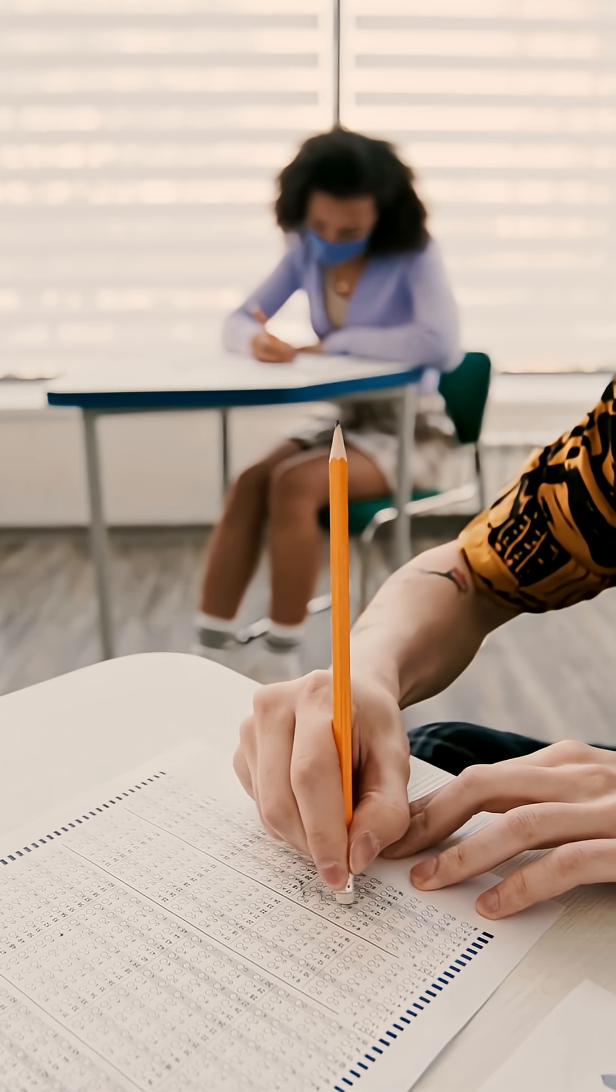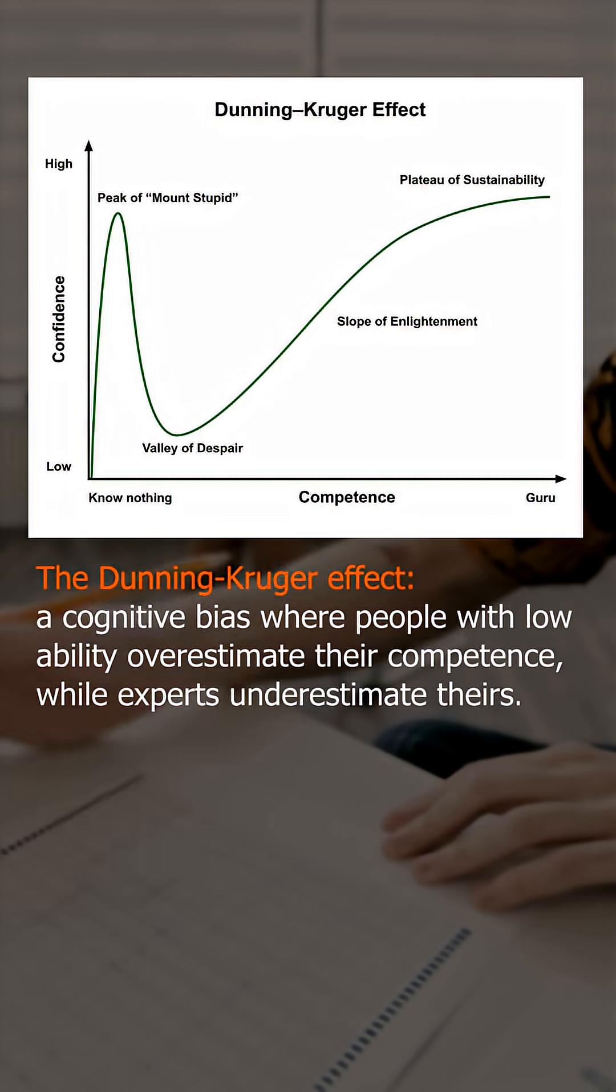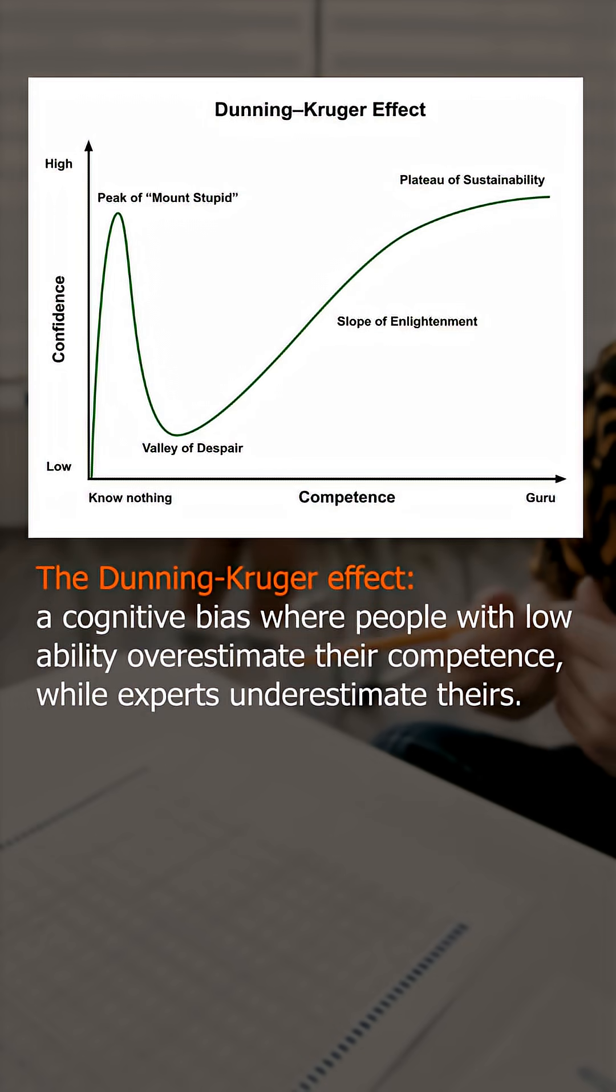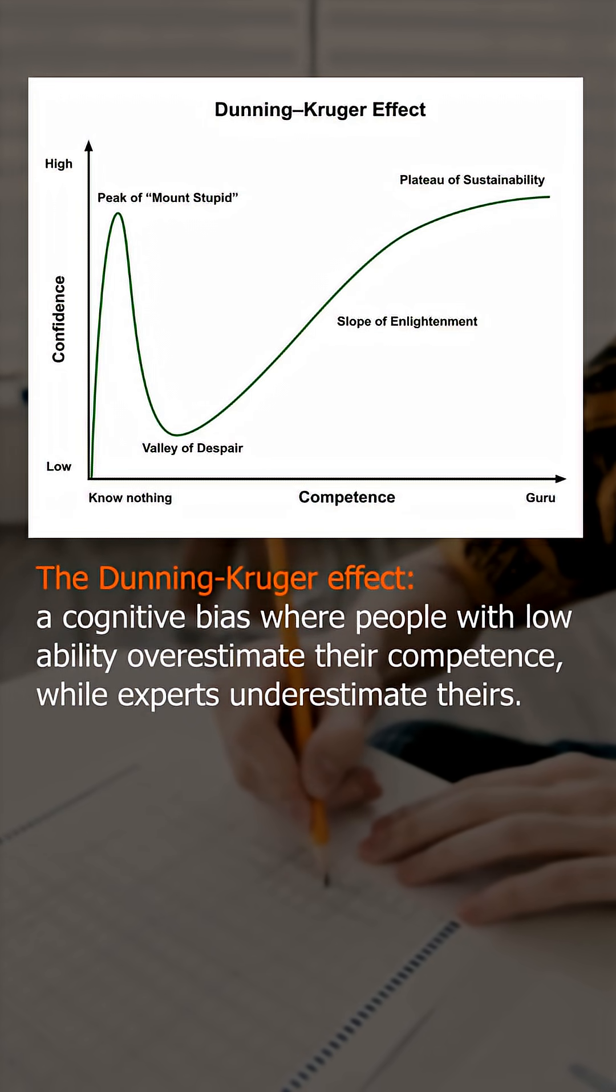Surprisingly, the people who actually did well in the test underrated themselves. This is the Dunning-Kruger effect. We sometimes lack the skill or ability to recognize our own mistakes, meaning we need a certain level of knowledge to even know that we don't know.